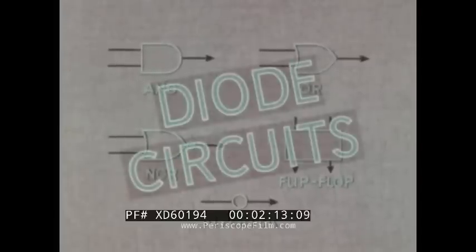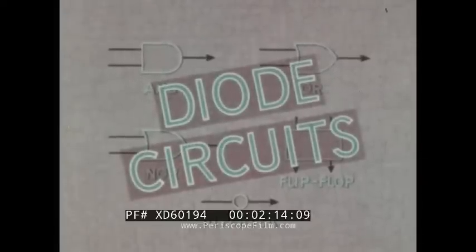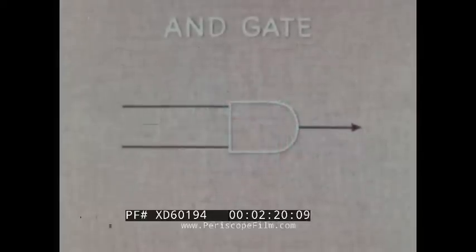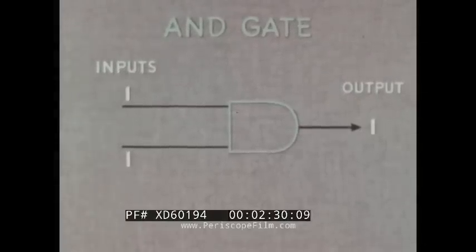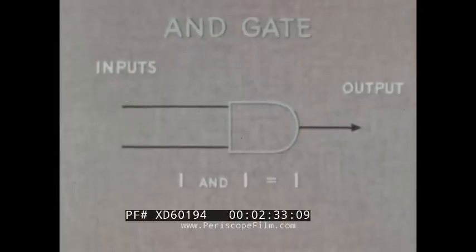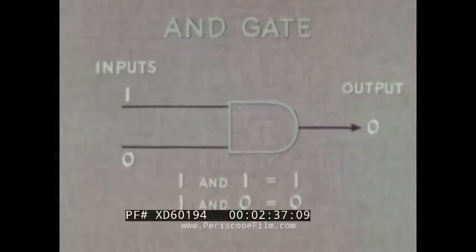Let us consider diode circuits that function as AND and OR gates. The logic AND gate has two or more inputs and a single output, and when all inputs are binary ones, the output is one. Conversely, when any or all inputs are zero, the output is zero.